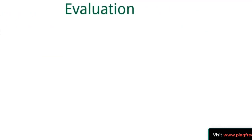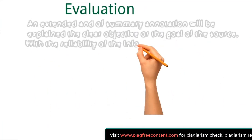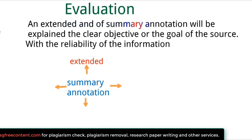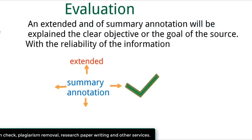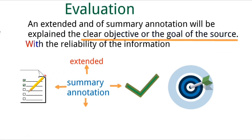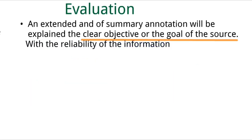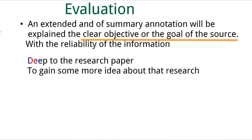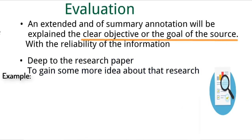The last one is evaluation annotation. This type is an extended version of summary annotation, where we explain the clear objective or goal of the source and why it fits into our list, along with the reliability of the information provided in the research paper. We also note if the research paper has any bias in it, and we need to dig deep into the research paper to gain more insight. An example is mentioned on screen.